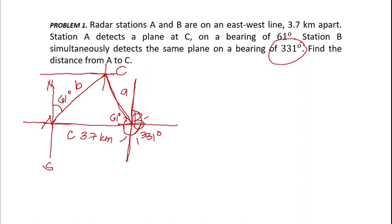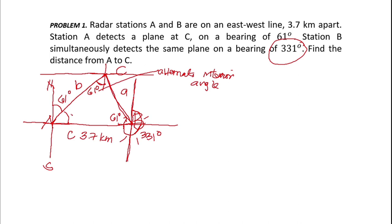If we extend the north-south line through B, there is an interior angle. By alternate interior angles, this part is 61 degrees. And from 90 degrees minus 61 degrees, we have 29 degrees. So this angle is 29 degrees and this angle is 61 degrees.